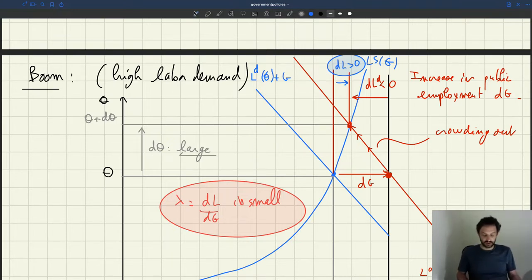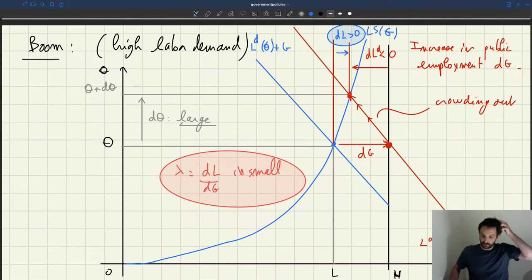So at the end, you know, the geometry of it, it all comes from the shape of the labor supply, that it's flat in kind of high unemployment regions and very steep in low unemployment regions. And that comes from how the matching process works and how congestion works. Okay. So as a result, in boom, increasing public employment is not a very effective way to reduce unemployment further.